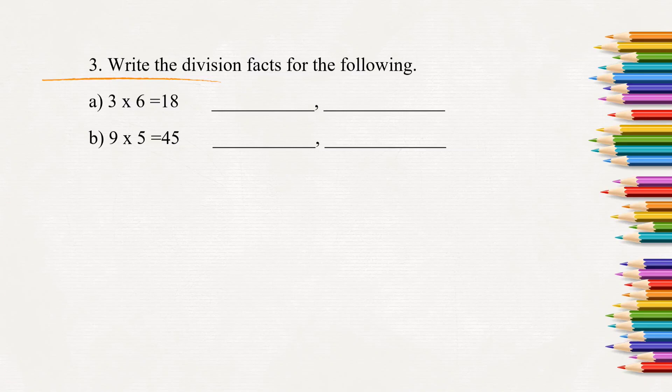Here, in the third question, write the division facts for the following. All the multiplication facts will have 2 division facts. So here 3 into 6 equals 18. Division fact will write as 18 divided by 6 equals 3 is 1 division fact.